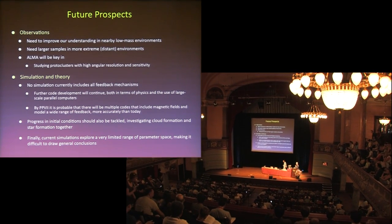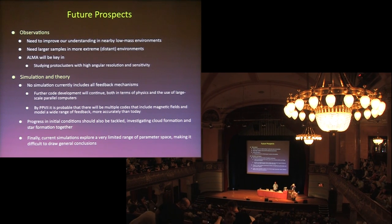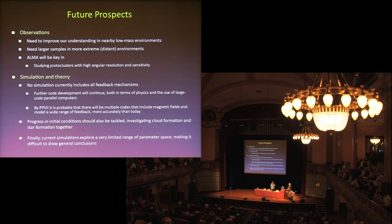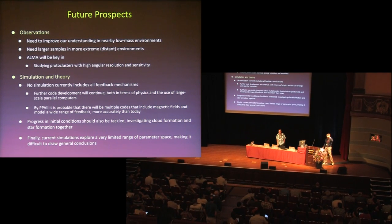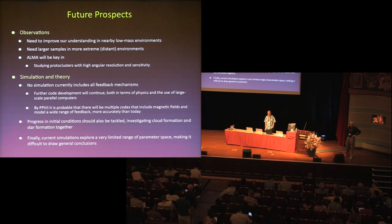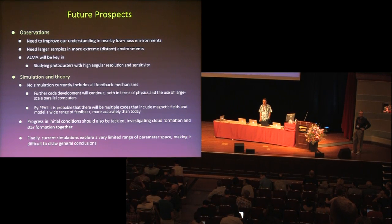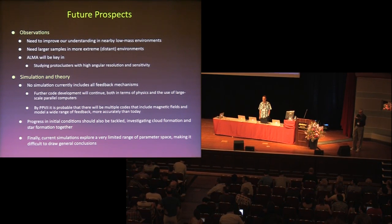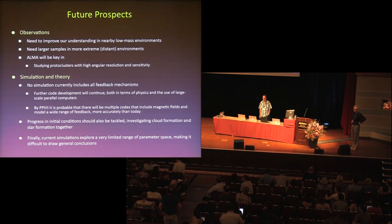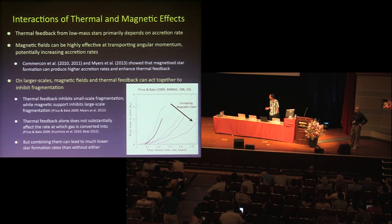Thanks for that great overview, Matthew. Questions please — Chris McKee: I wanted to ask about the possible role of supernovae. There are a number of different feedback effects with massive stars, but photoionization occurs first. In many cases, particularly for very massive stars that can explode after only 4 million years, the HII region associated with those is so large that it essentially pushes away all the molecular gas, and by the time the supernova goes off, it's going off in a very low density cavity with almost no effect on the cloud. Could you comment on that?